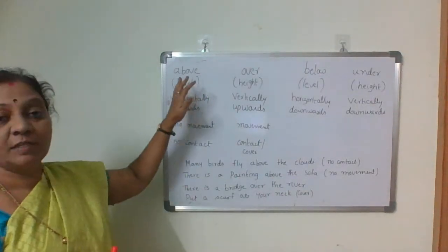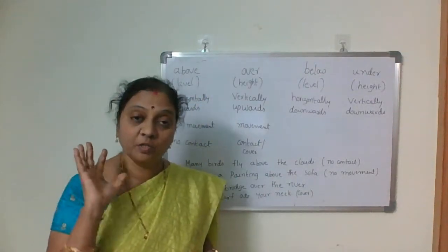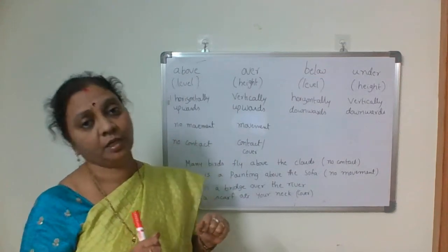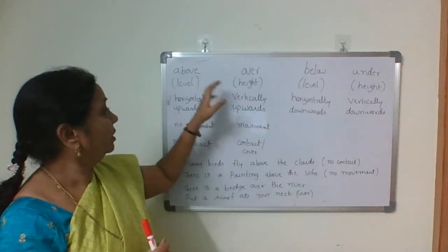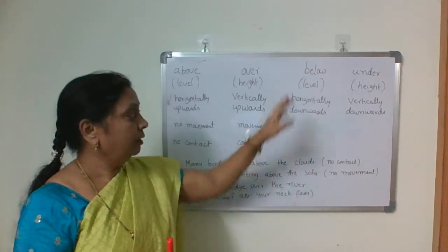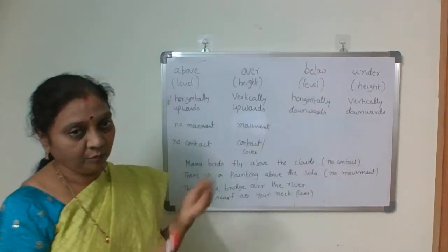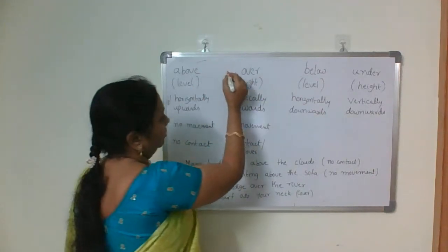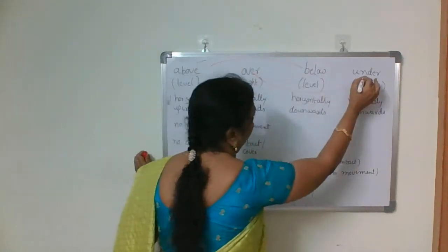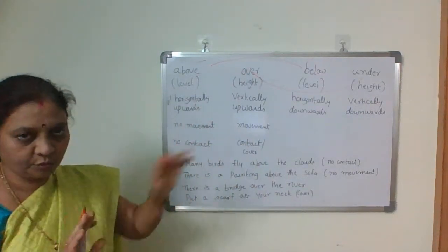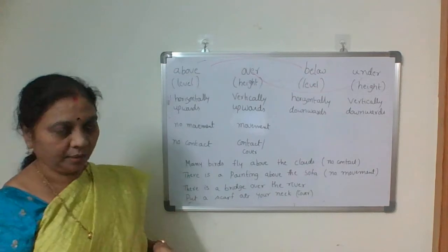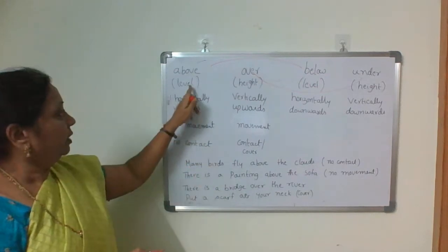Look at these four words — prepositions of place, but there is a lot of confusion. Don't get confused; be clear. Above, over, below, under. Above and below are opposites; over and under are opposites. 'Above' talks about the level — horizontally upwards.